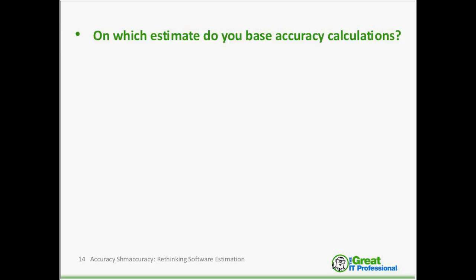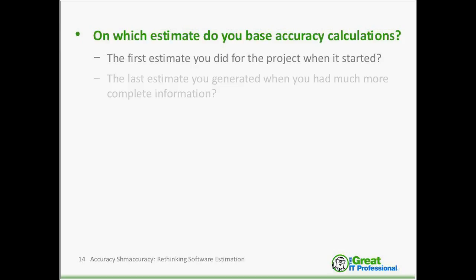Staffing can change if we lose key development staff or a project manager. If a good process is in place, when changes occur you should be re-evaluating your estimate and re-estimating effort, cost, and schedule. Then the question becomes: which estimate do you base your accuracy calculations on — the first estimate when the project started, or the one done right before you delivered the finished product?